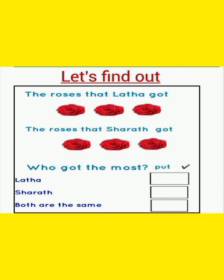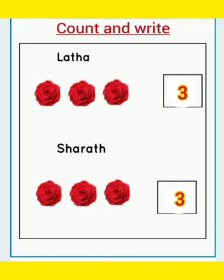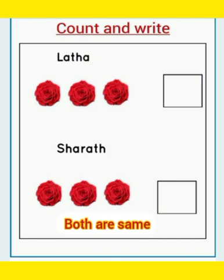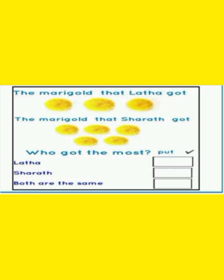Here we see Lata got three rose flowers and Sharath also got three rose flowers. That means both of them got the same number. Now look here — the marigolds that Lata got: three. The marigolds that Sharath got: five. Then tell me, who got the most?